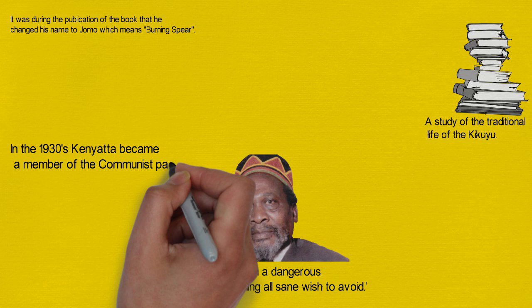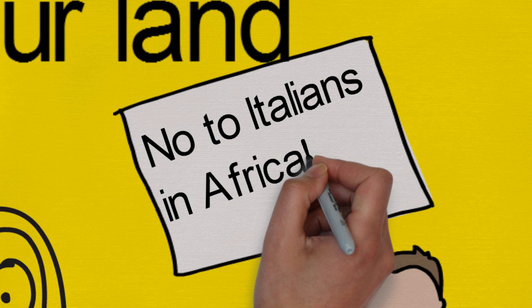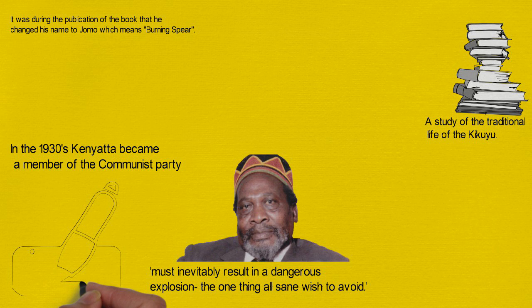In the 1930s, Kenyatta became a member of the Communist Party, where he met like-minded nationalists and writers. He took part in protests against the Italian invasion of Ethiopia. During that period, the government banned the KCA, so he remained in England, teaching and working as a farm laborer, but kept writing for the cause of the Kikuyu.